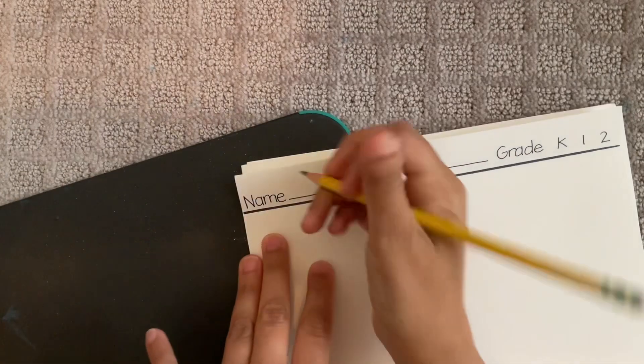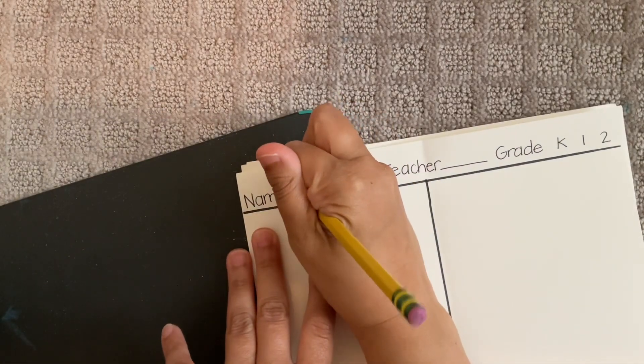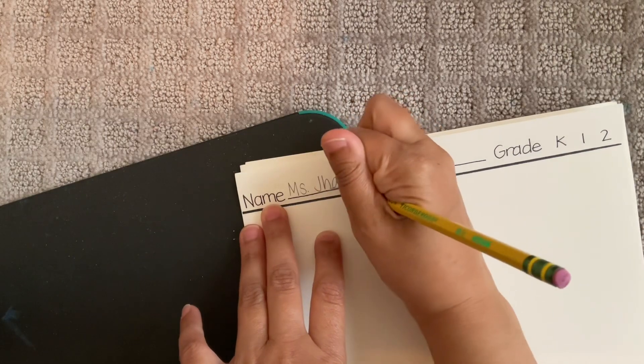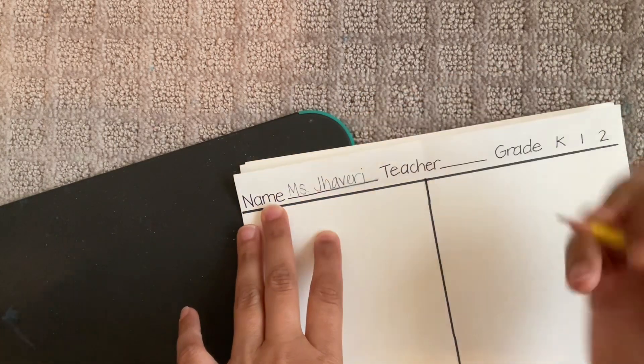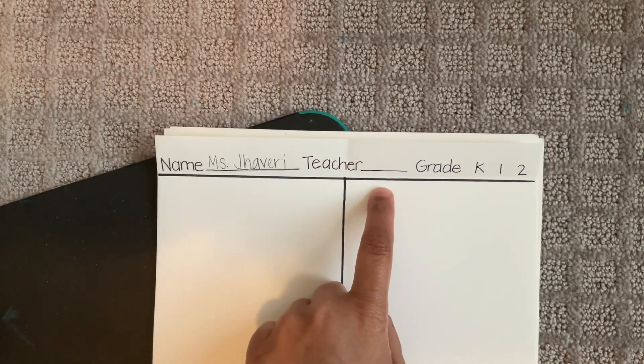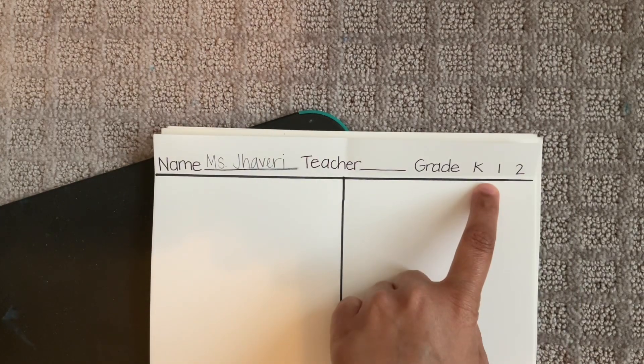At the top, write your name. Since I'm Miss Javeri, I will write that. You will write your name. Write the first letter of your teacher's name and then circle what grade you're in.